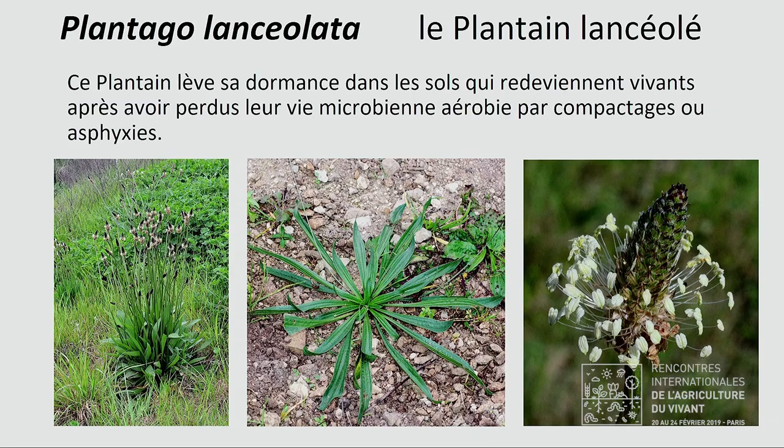Une plante classée dans les bons indicateurs est en réalité un pionnier des sols qui étaient en anaérobie, avec très peu de vie microbienne, asphyxiés. Le jour où la vie revient dans le sol, où ce sol redevient vivant, c'est la première espèce pionnière qui apparaît lorsque la vie microbienne aérobie commence à se redévelopper. C'est le plantain lancéolé, qui est un anti-histaminique — il fait baisser la température et calme le jeu. Ce n'est pas pour rien qu'il pousse au moment où le sol redevient vivant.